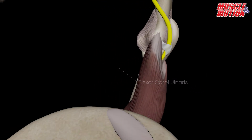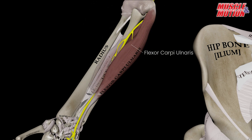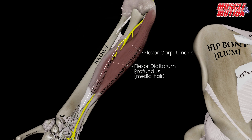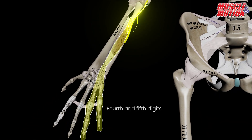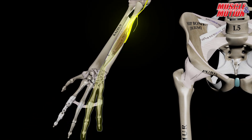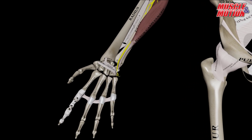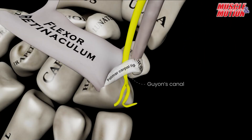In the forearm, it innervates the flexor carpi ulnaris and the medial half of the flexor digitorum profundus, which controls flexion of the fourth and fifth digits. From there, it travels toward the wrist, passing superficial to the flexor retinaculum within Guyon's canal.